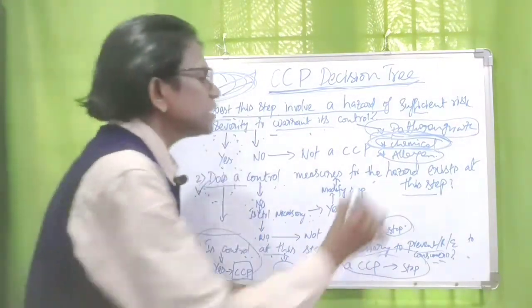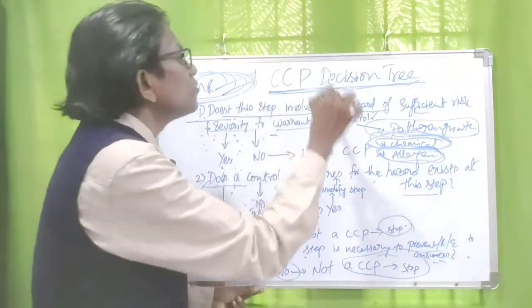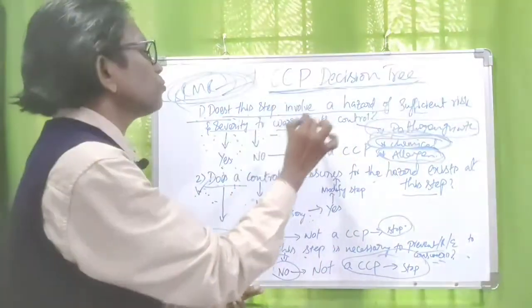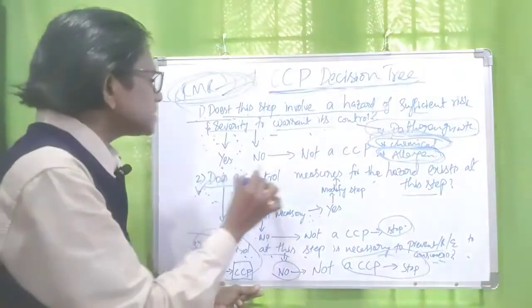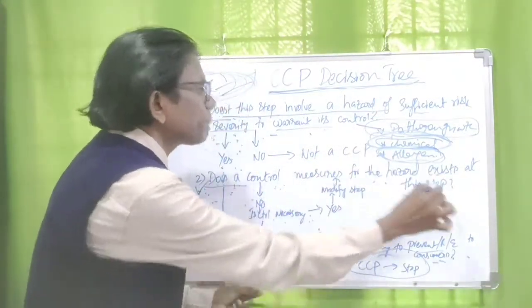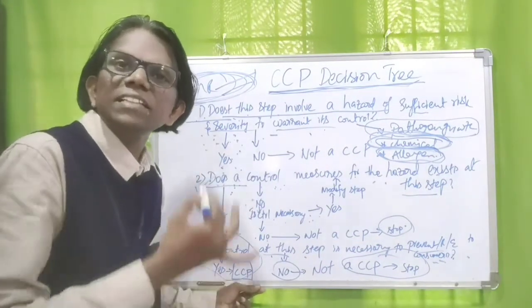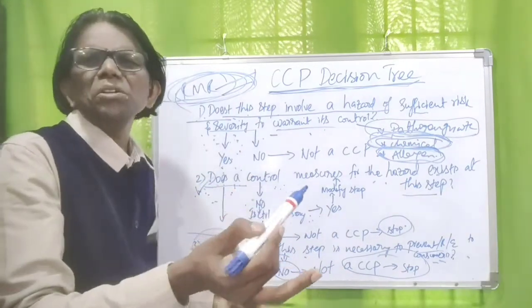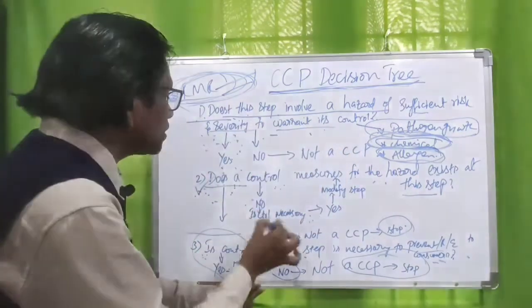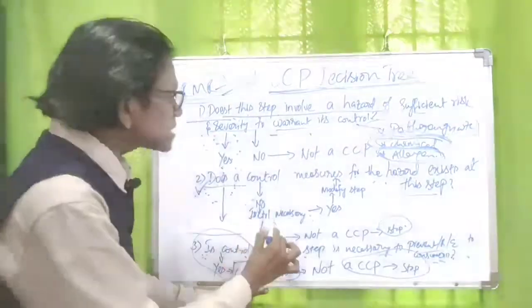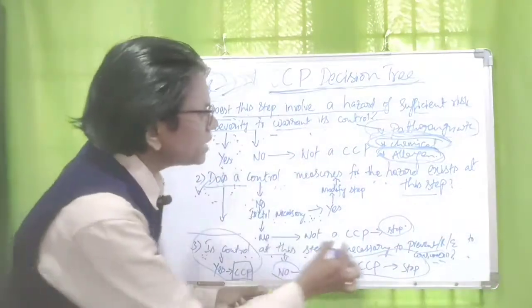For shrimp at raw material receiving stage, we now consider allergens. The first question: does this step involve a hazard of sufficient risk and severity to warrant its control? Yes. The second question: does a control measure for the allergen hazard exist at this step? No — control measures are not required at this step because the subsequent labeling step will follow. The second question answer is no. Is a control measure necessary at raw material receiving stage? Again, no. Therefore, it is not a CCP.